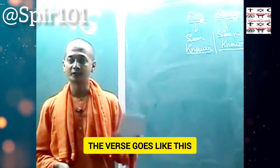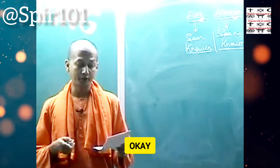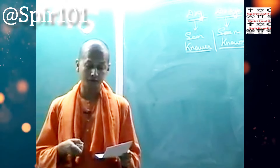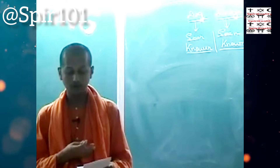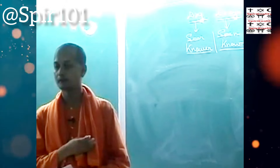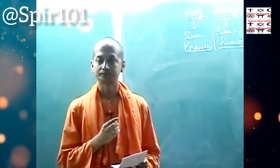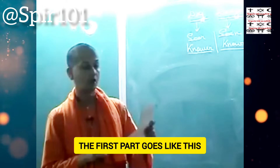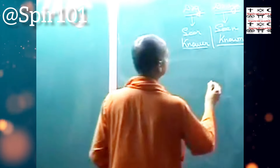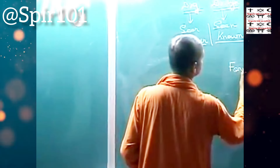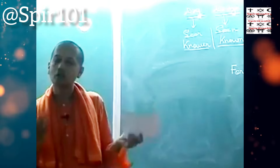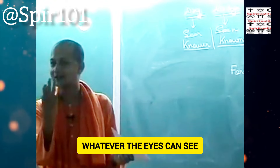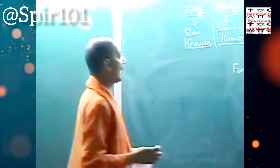The verse goes: rupam drishyam locanam drikk, tad drishyam driktu manasam, drishya dhivrittaya sakshi, drige vanatu drishyate. The first part: rupam drishyam locanam drikk. Rupam means form — forms are what you see. Literally rupam means color but it extends to forms. Whatever the eyes can see, those are called rupam.